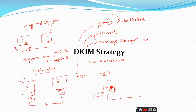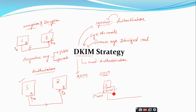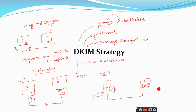DKIM does not use the private key of the sender — this is a very important point. The DKIM strategy entirely depends on the ADMD, which is responsible for signing and verifying signatures. It makes use of its own private key for signing, and at the receiving end the ADMD of the receiver takes responsibility of verifying the message's signature using the public key of the sender's ADMD.